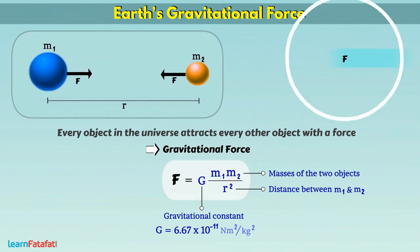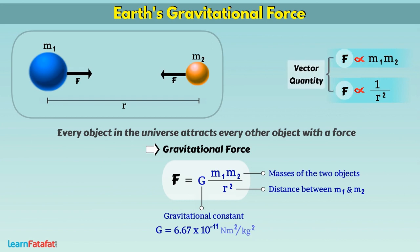Thus, gravitational force is directly proportional to the product of masses of two objects and inversely proportional to the square of distance between them. It is a vector quantity, meaning it has magnitude as well as direction.